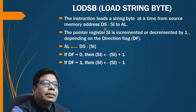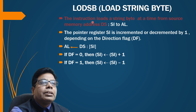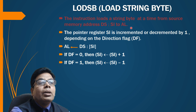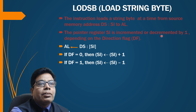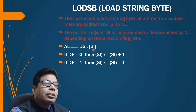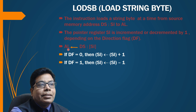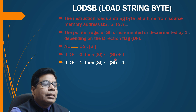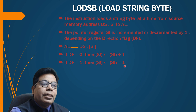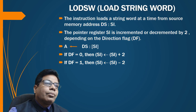LODSB — load string byte — loads a string byte at a time from source memory address DS:SI into the AL register. The pointer register SI is incremented or decremented by one. If DF=0, SI is incremented by one; if DF=1, SI is decremented by one.